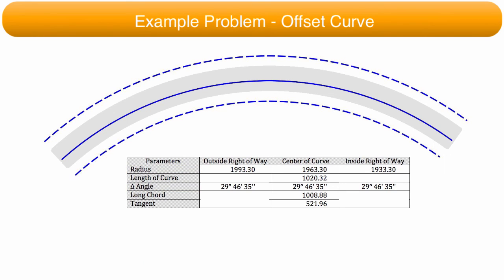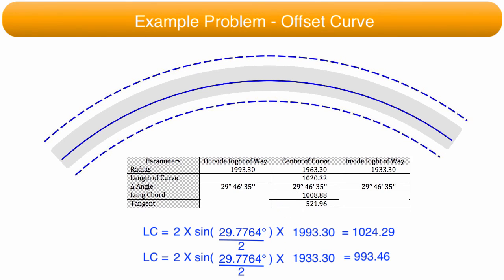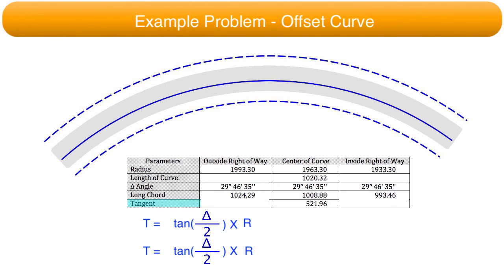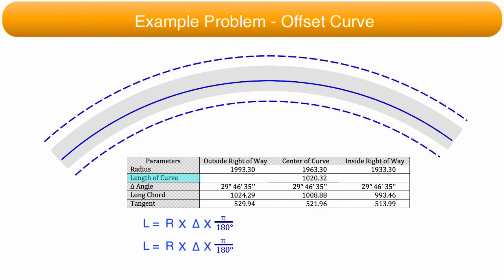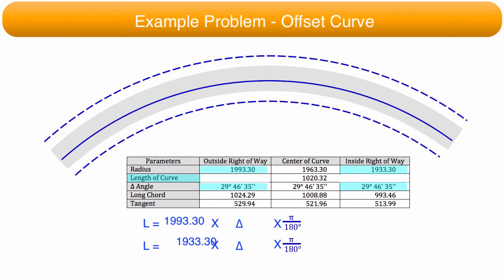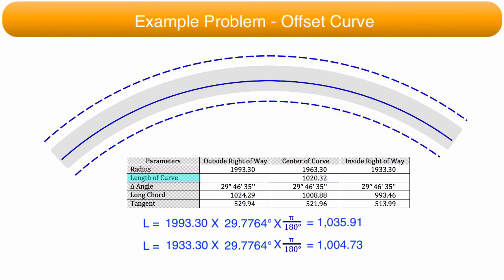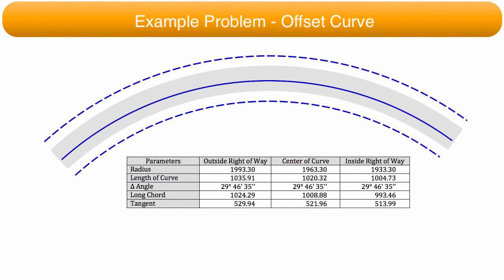The long chord distances are found by substituting the pertinent radius and delta angle in decimal degrees into the long chord equation, and the calculated values are placed in the table. The tangent distances are found by substituting the radius and delta angle into the tangent equation and placed in the table. The arc distances are found by substituting the pertinent radius and delta angle into the arc length equation. The calculated arc length distances are placed in the table, completing the table.